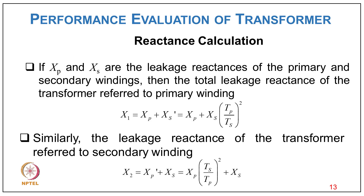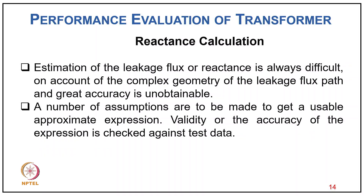If Xp and Xs are the leakage reactances of primary and secondary windings, then the total leakage reactance referred to primary is X1 = Xp + Xs × (Tp/Ts)², and the leakage reactance referred to secondary is X2 = Xp × (Ts/Tp)² + Xs. Estimation of leakage flux is always difficult due to the complex geometry of the leakage path, so a number of assumptions are made to get usable approximate expressions, and their accuracy is checked against test data.